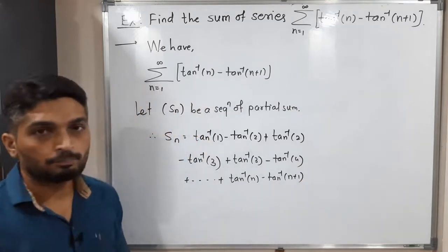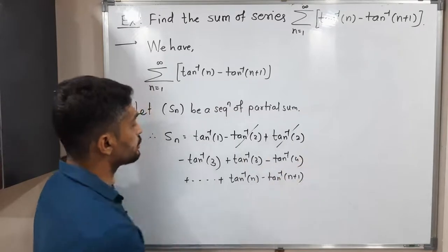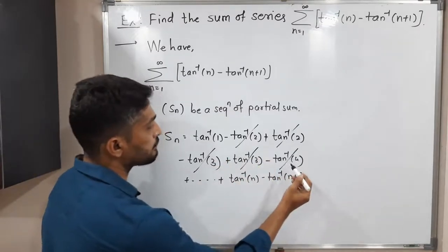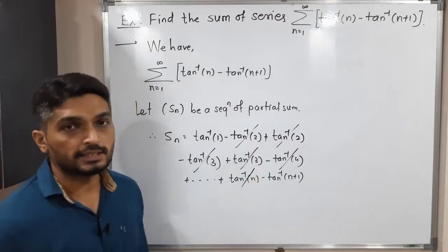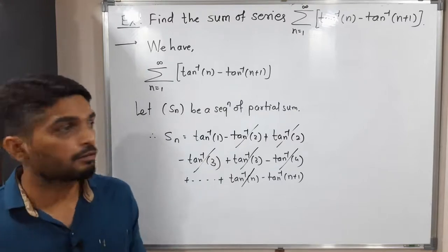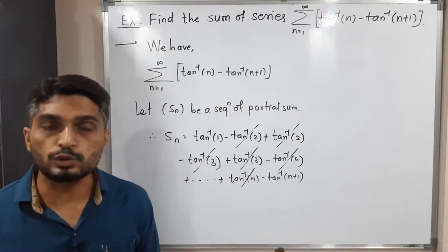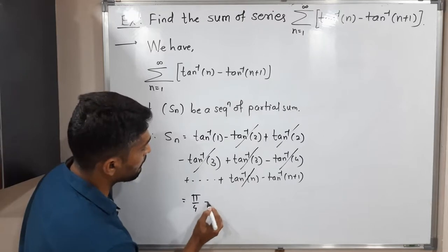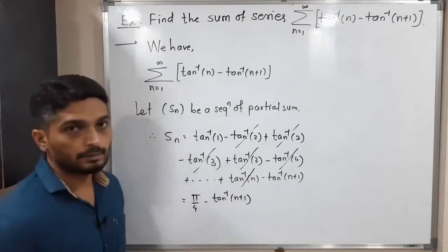Can we cancel any terms here? Yes, definitely. Minus tan inverse 2 plus tan inverse 2, minus tan inverse 3 plus tan inverse 3, minus tan inverse 4 — these will get canceled with the next term. In this way, tan inverse n will get canceled with minus tan inverse n. So all terms will get canceled except the first and last term. The first term is tan inverse 1, whose value is pi by 4. So we have SN equal to pi by 4 minus tan inverse of n plus 1. This is the formula of SN.